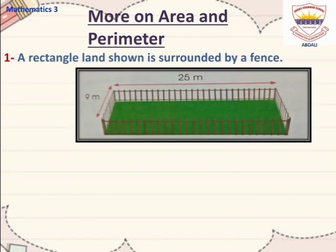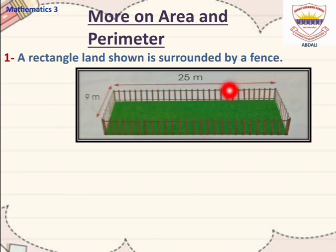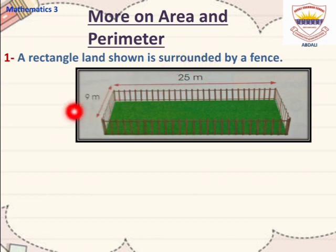Let's solve Question No. 1 of More on Area and Perimeter. A rectangle is shown that is surrounded by a fence. Its length is 25m and breadth is 9m.